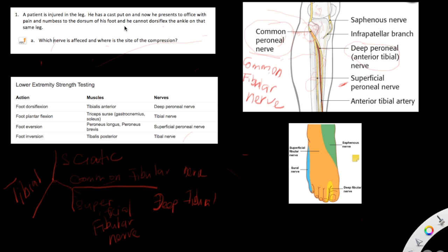Another presentation this patient has is the inability to dorsiflex the ankle. Dorsiflexion of the foot is performed by the tibialis anterior muscle, which is part of a group of muscles in the anterior compartment of the leg. The muscles in the anterior compartment of the leg are supplied by the deep fibular nerve.